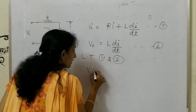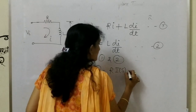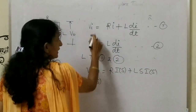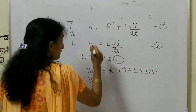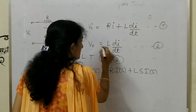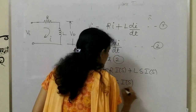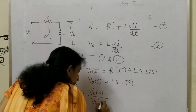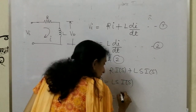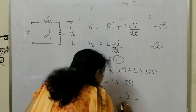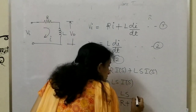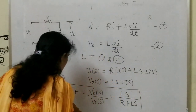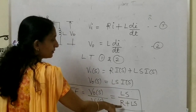Taking the Laplace transform: VI(S) equals R·I(S) plus Ls·I(S), and V0(S) equals Ls·I(S). The transfer function V0(S)/VI(S) — substituting the values and taking Ls common in the denominator gives R plus Ls, and I(S) cancels. So the transfer function of this RL circuit is Ls/(R + Ls).